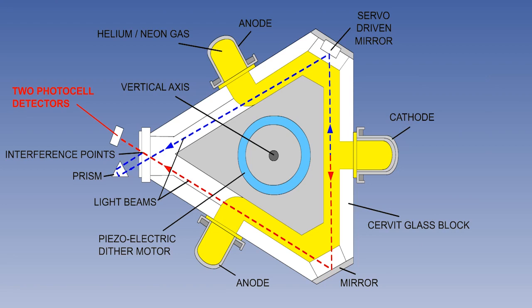The laser gyro contains a photoelectric detector. It can tell if the interference pattern is static, and if it is moving, it can detect the direction and rate of rotation.